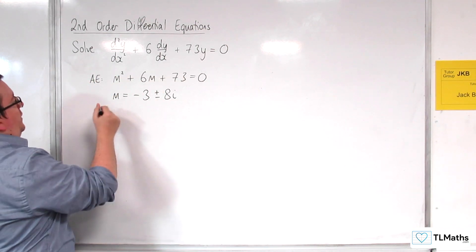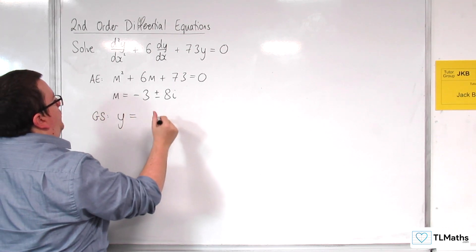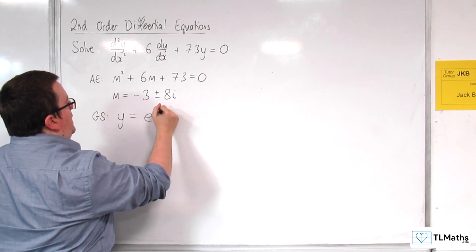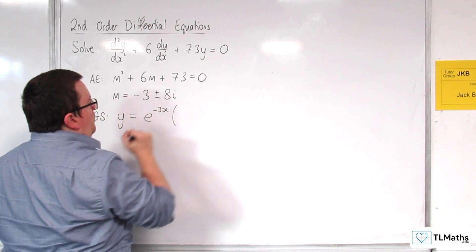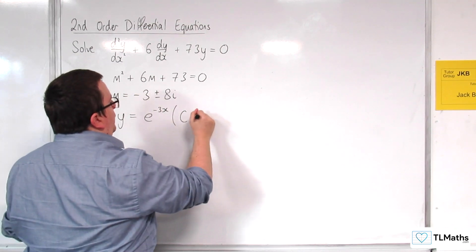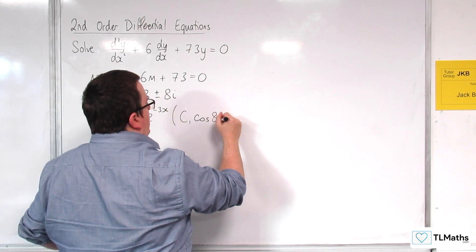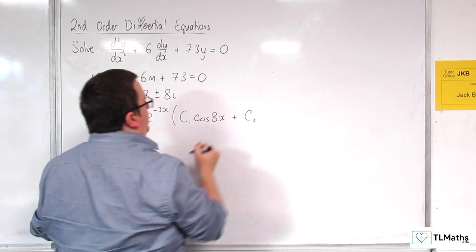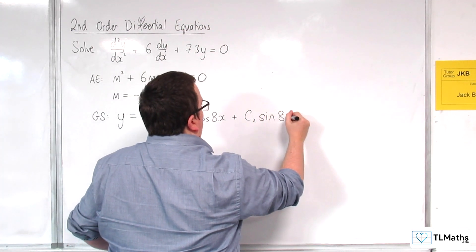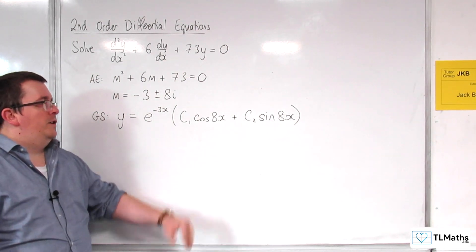So that means that our general solution will be of the form y = e^(-3x) times (C₁ cos(8x) + C₂ sin(8x)). And that is my general solution.